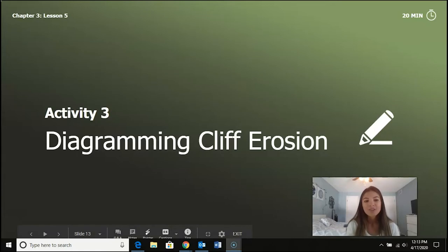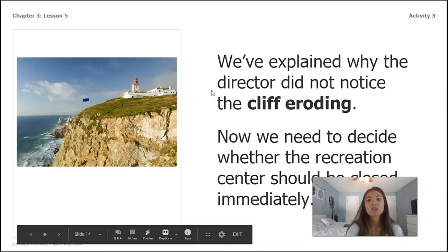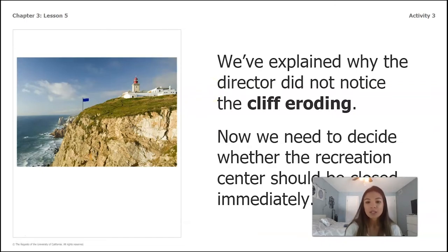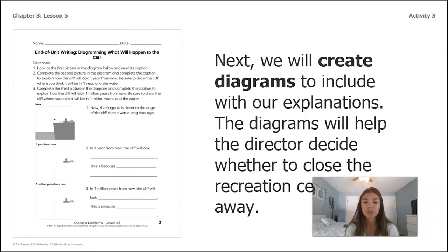Hi second graders, we are back for the last part of lesson five and we are going to be diagramming cliff erosion. We've explained why the director did not notice the cliff eroding — now we need to decide whether the recreation center should be closed immediately. We will create diagrams to include with our explanations; the diagrams will help the director decide whether to close the recreation center right away.